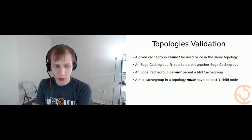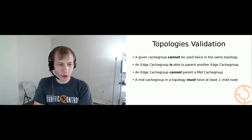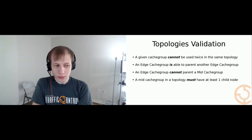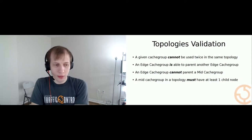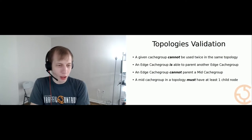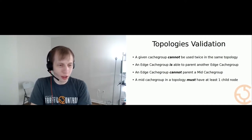As far as what you can and cannot make for a topology: you cannot use the same cache group twice in a topology. If you try to do that, it will say no. If you want to make your CDN out of all reverse proxies, you can make it all edges, or have the last two tiers be edge cache groups. Edge cache groups can parent other edge cache groups, but edge cache groups cannot parent mid-cache groups, which are forward proxies. A mid-cache group in a topology must have at least one child node — mid-cache groups cannot be leaf nodes.